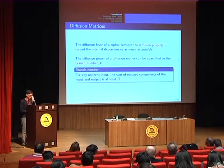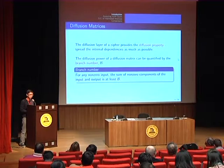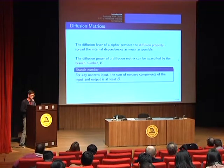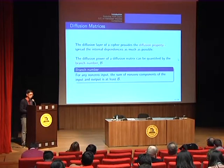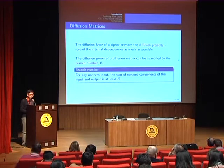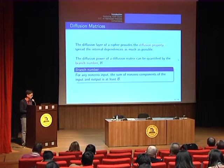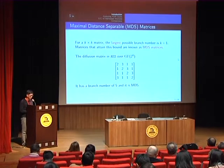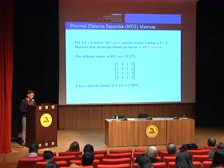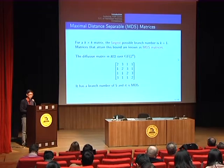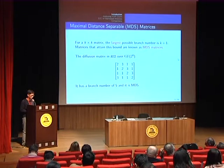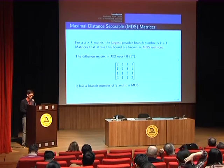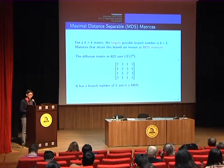The diffusion layer of the cipher provides the diffusion property, and the diffusion power of the diffusion matrix can be quantified by the branch number B. For a pair of input and output vectors, the number of non-zero components will be at least B. For a k×k matrix, the largest possible branch number will be k+1, and any matrix that attains this bound is known as the MDS matrix. For instance, for the AES matrix, it has branch number 5, and hence it's an MDS matrix.